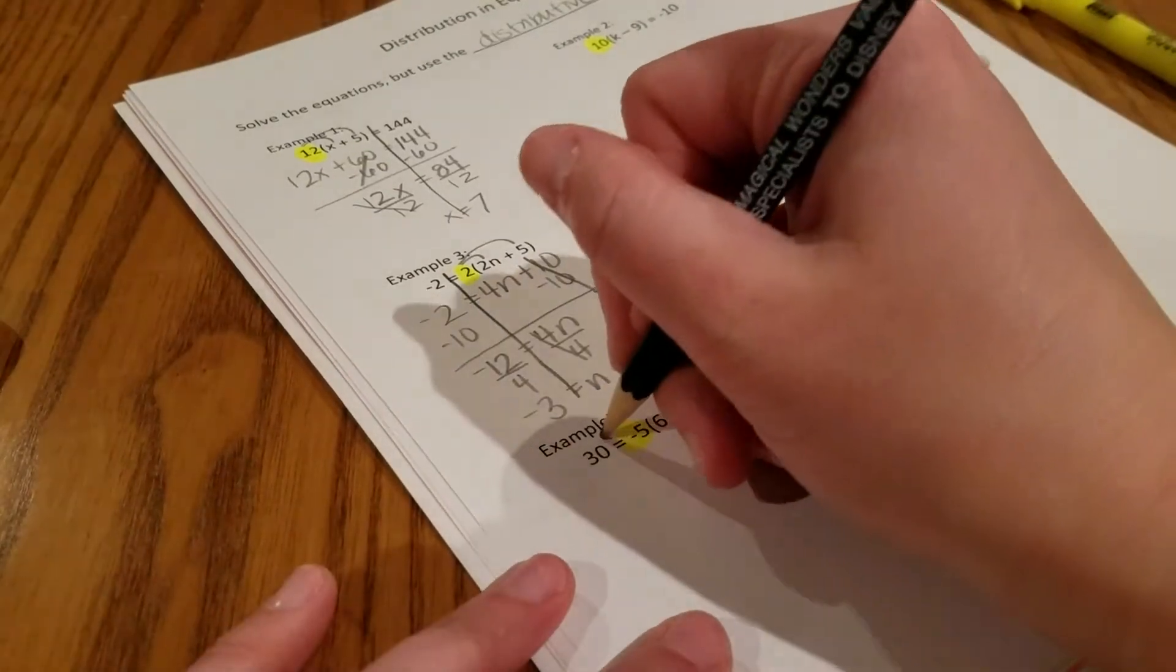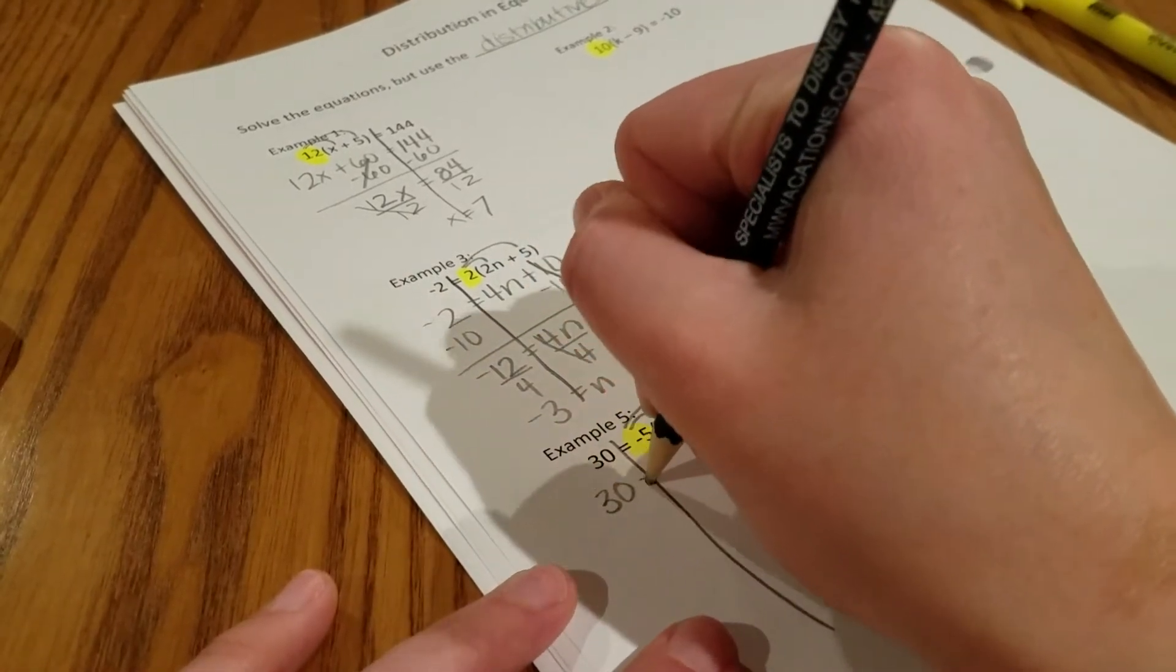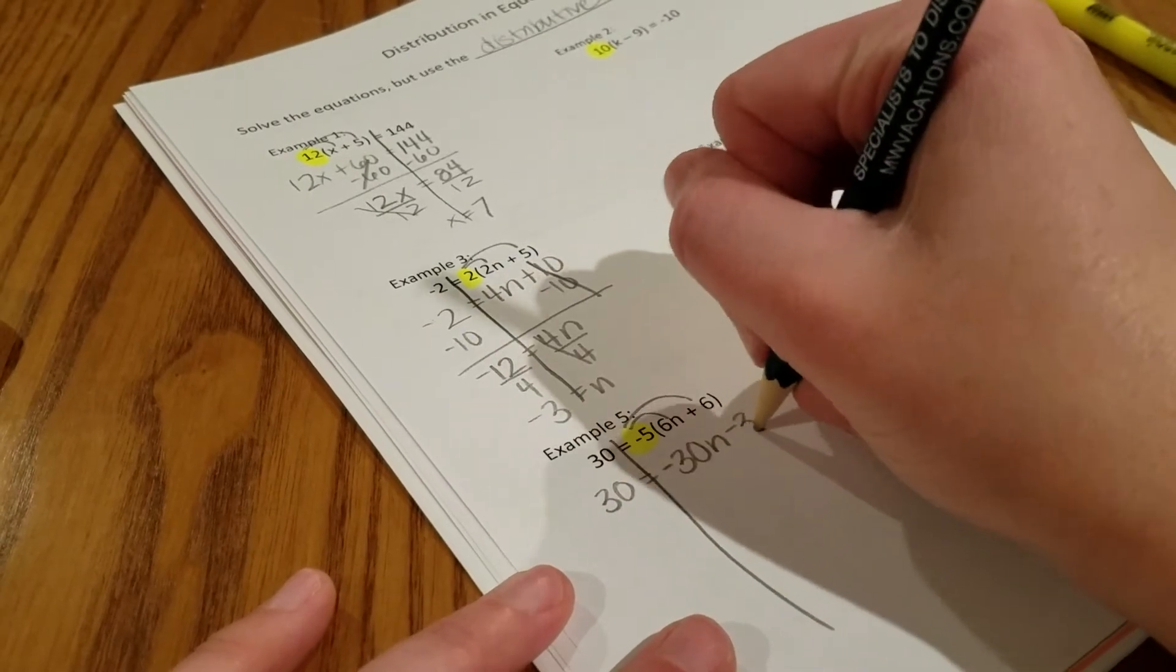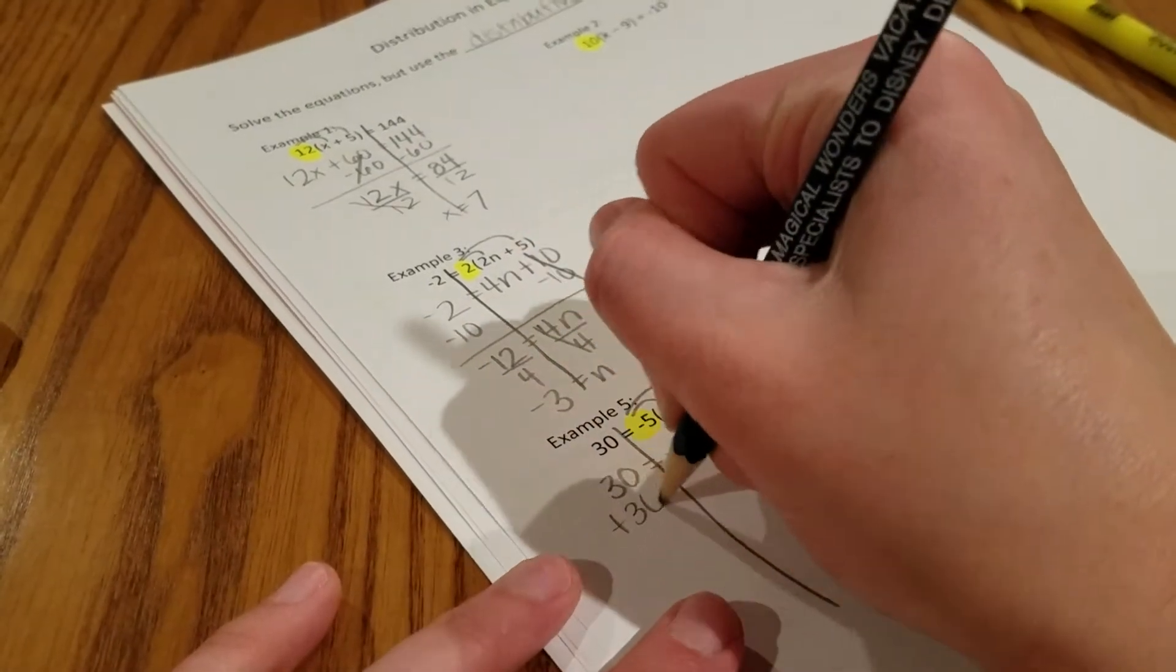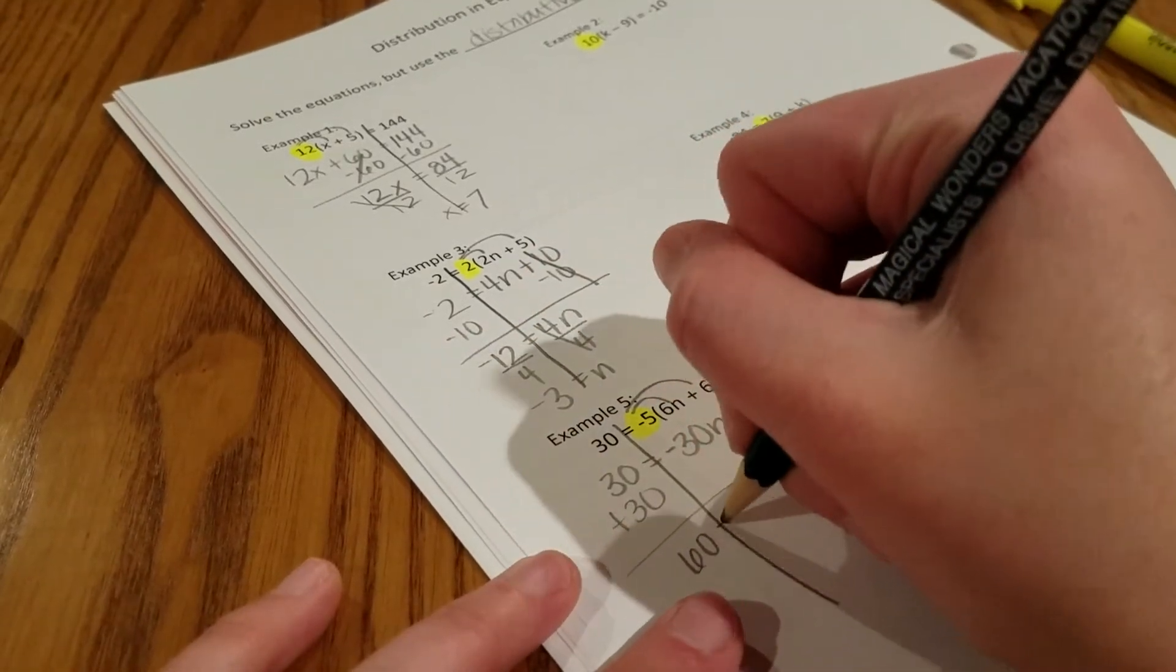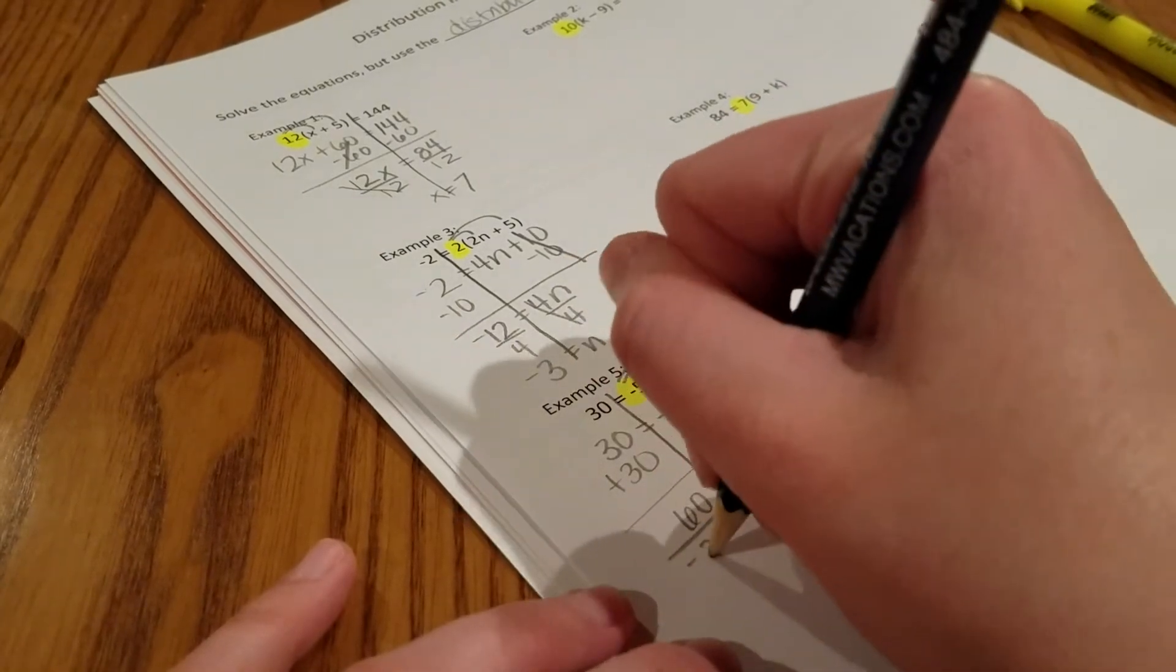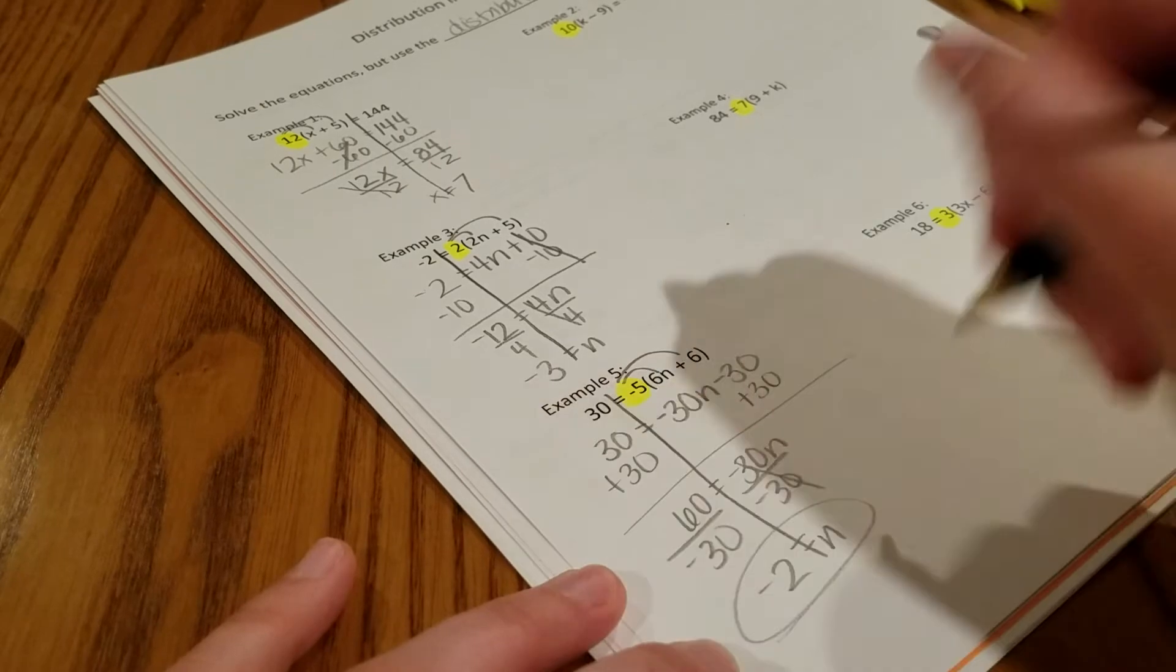In example number five, drop a line down at your equal sign. Distribute. So we get negative 30n and negative 30. I'm going to add 30 to both sides. So 60 equals negative 30n, and n equals negative 2.